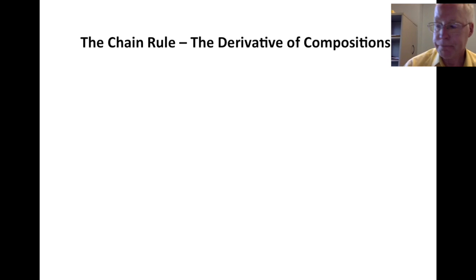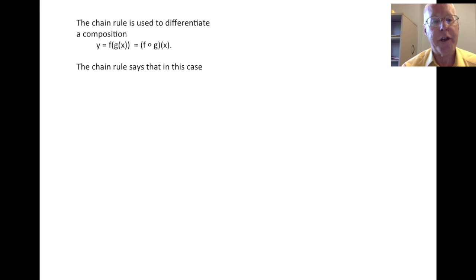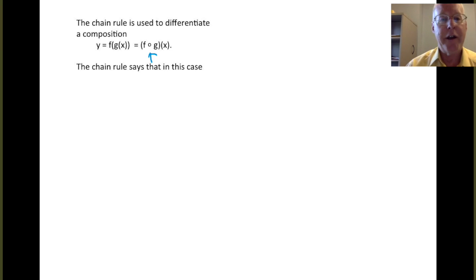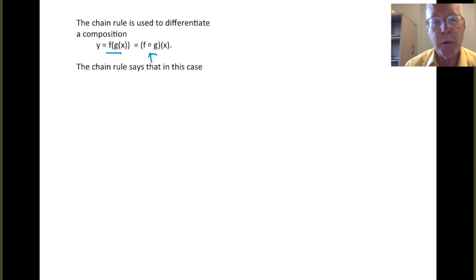The chain rule is principally for differentiating compositions. It is used to differentiate functions of the form y equals f of g of x. This is the composition of the function f with g, also sometimes written as f circle g of x. The circle notation means we're composing f with g — the function g goes inside the function f. We won't see the circle notation very much, but it is around and you may encounter it sometimes.